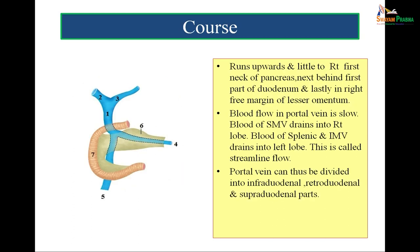Regarding the course of the portal vein, it is first formed below the first part of the duodenum, then it goes behind the first part of the duodenum, and then it enters the right free margin of the lesser omentum. There is a Pringle's maneuver in which if bleeding is taking place, compression is done at the right free margin of lesser omentum to arrest the bleeding, since it contains the portal vein and hepatic artery. If the bleeding does not stop, this means the bleeding may be from the inferior vena cava.